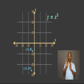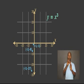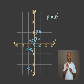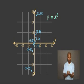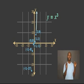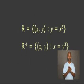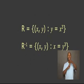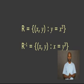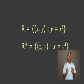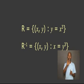Hello again, students. The table of values for Y equals X cubed includes the points: negative 8 and negative 1, negative 1 and 0, 0 and 1, 1 and 2, 8 and 3, and 27. Therefore, the graph of Y equals X cubed looks like this. Now, we must determine the inverse of the relation. The inverse of R equals (X, Y) such that X equals Y cubed.